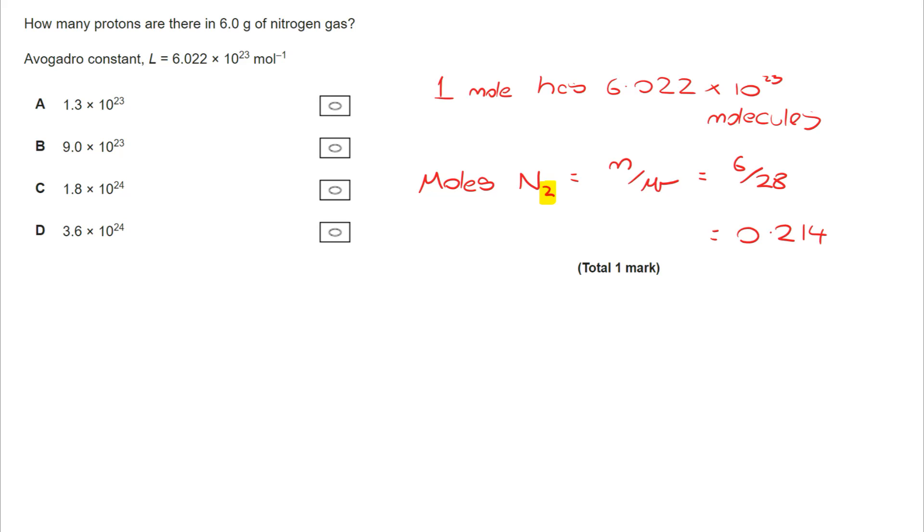So if you get that wrong, everything else you do after this is going to take you towards the wrong answer. But once we've got the number of moles, we can then work out how many molecules there are. If one mole contains 6.022 by 10 to the power of 23, then this will be 0.214 times Avogadro's number. And we get our number of molecules.